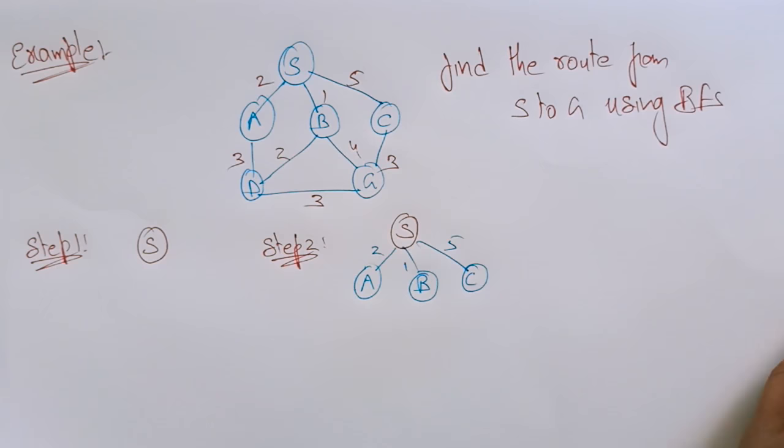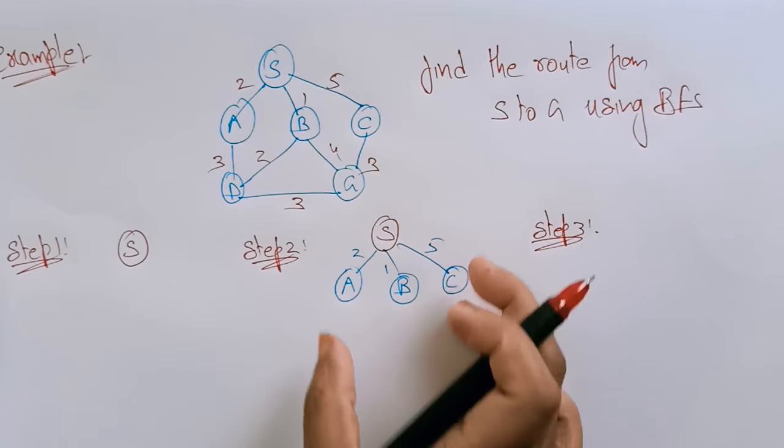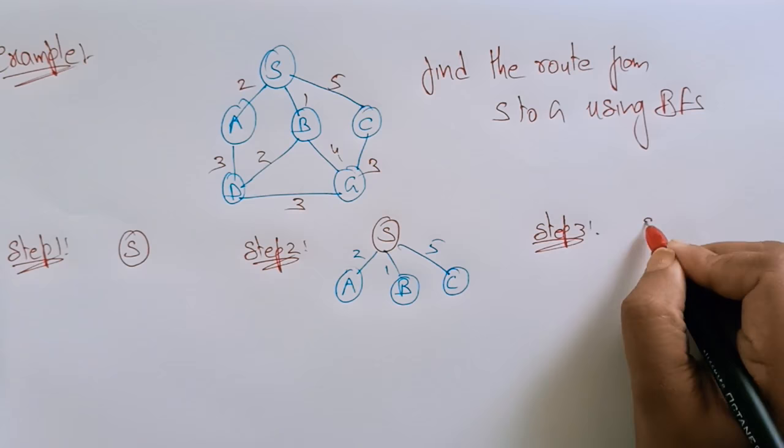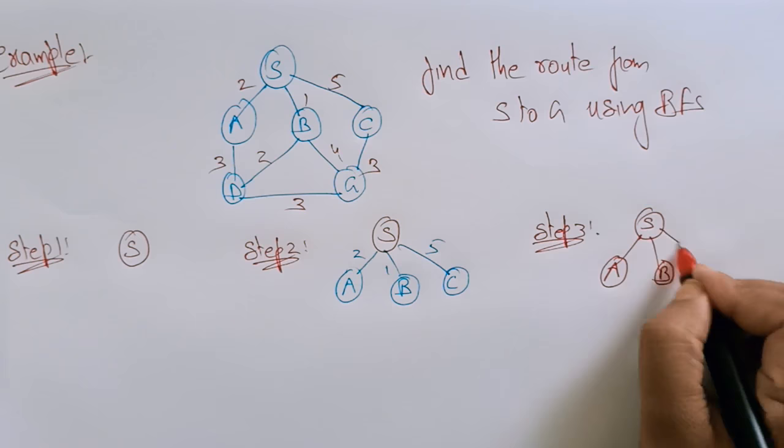Now coming to step 3, expand the graph in the form of a tree. Just expand it. S is the root node, A, B, C are the successors.